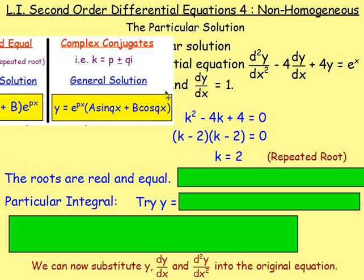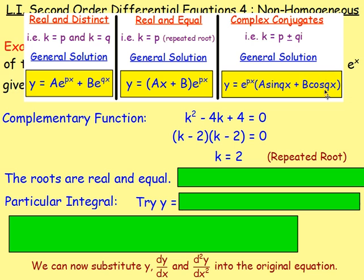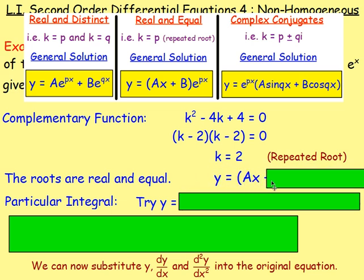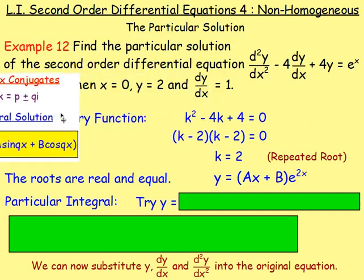The roots are real and equal. When the roots are real and equal, you think back to the table: if there is a repeated root, the general solution is of the form (ax + b)e^(px). Here p is 2, so the complementary function is y = (ax + b)e^(2x).